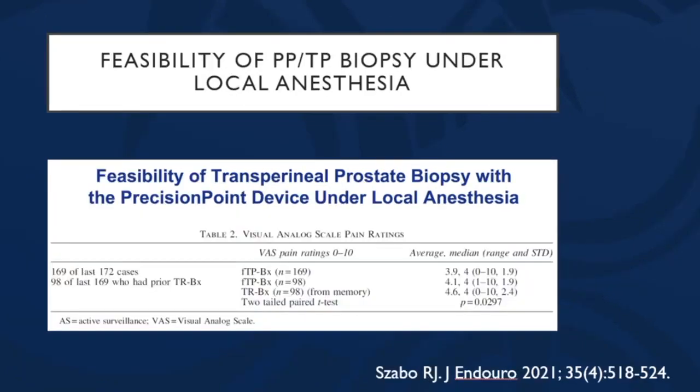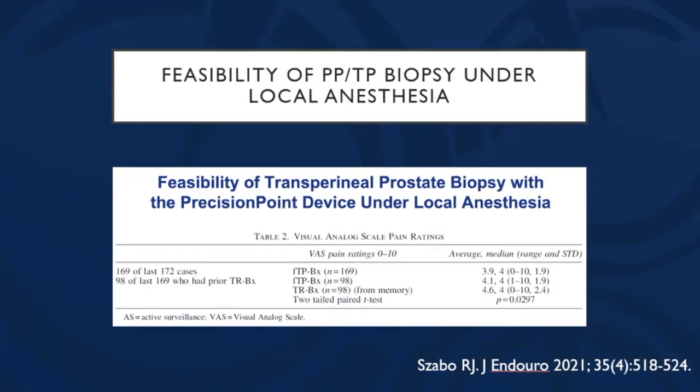A group out of Southern California under Richard Szabo's guidance conducted a trial, all local anesthesia. Overall VAS pain scores were 3.9, and for men who had a prior transrectal biopsy they were very similar at 3.9 to 4.1. Interestingly, based on historic memory, their transrectal pain scores had been 4.6. The point is that it's very feasible under local anesthesia — and many patients who've had prior transrectal biopsies report the transperineal pain as less than or at least equivalent.